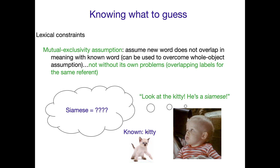Here is an example with a kitty. If a child knows this is a kitty and someone says 'Look at the kitty,' they say 'Yep, that's the kitty.' Then someone says 'He's a Siamese.' They think: 'Siamese can't mean the whole kitty because I already have a word for that — kitty. So what does it mean? Does it mean a part of the kitty? Does it mean he's this, or does it mean he's fuzzy? What does it mean?'